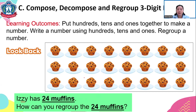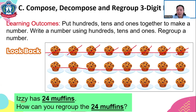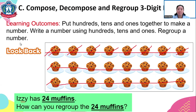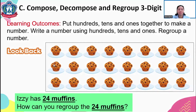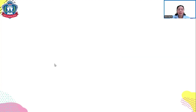Eazy has 24 muffins. How can you regroup the 24 muffins? When we say regroup, it means group again. Based on this picture, the muffins are grouped as 8, 8, and 8 — so 8 times 3. Can we regroup the 24 in another way? If you know how, you can share that with Miss Claire during our class.